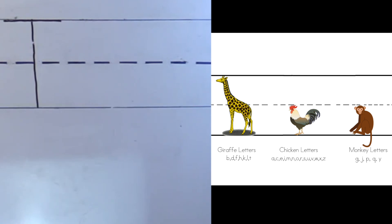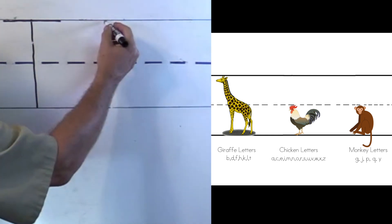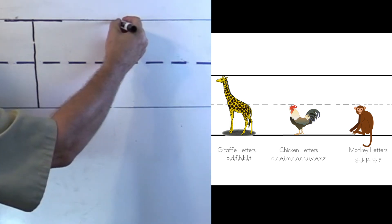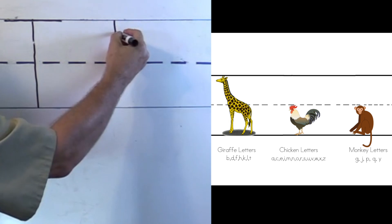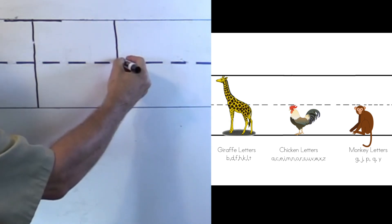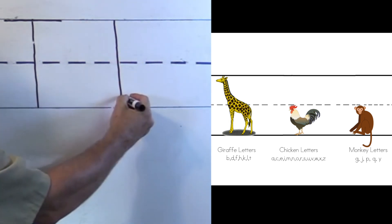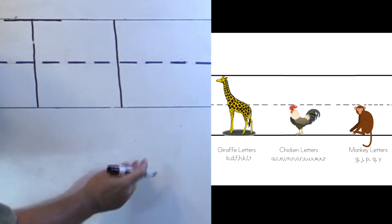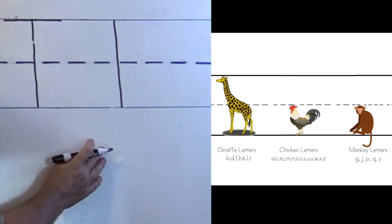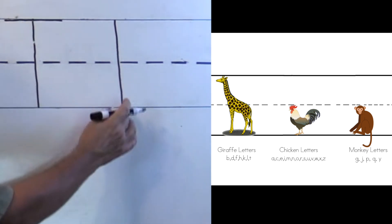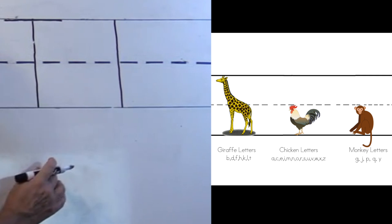Now with the lowercase T, what do we do? We start at the top. Here we go. You guys ready? You have your pencils there? Okay, let's go all the way down. All the way down to the bottom. Good job. And then I stop. I don't go below the line. This is not a monkey letter. It's a giraffe letter. So I have to stop at the bottom line.